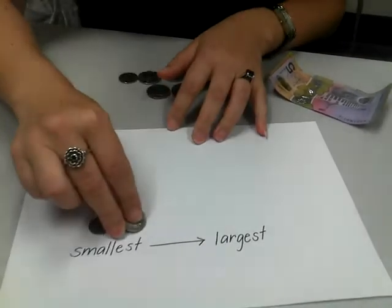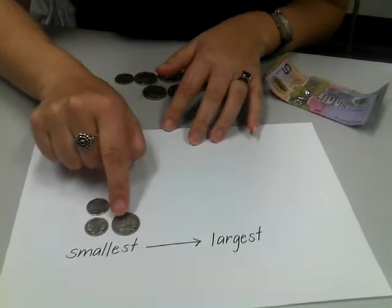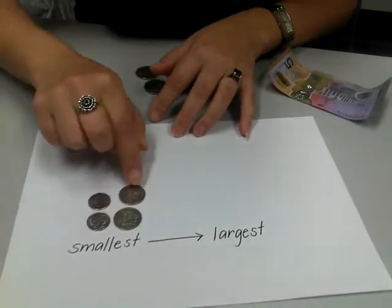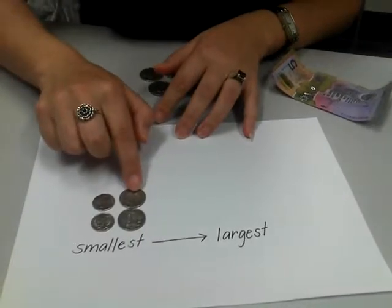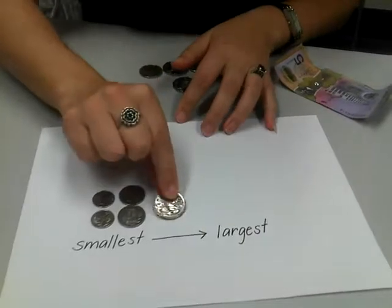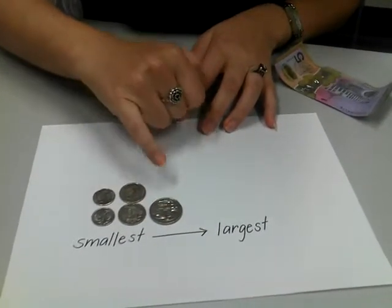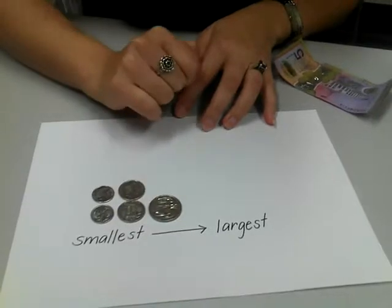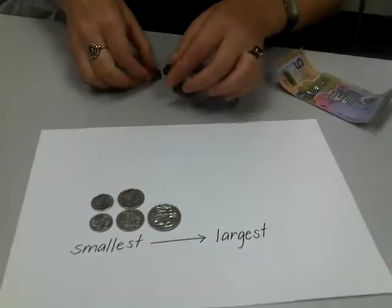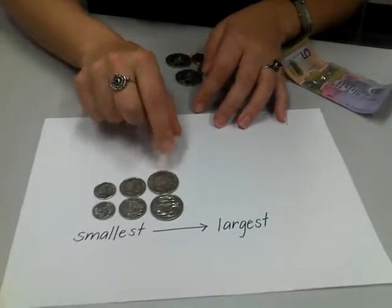This is the 10 cent piece. It has a picture of a lyrebird and the number 10, and on the other side a picture of the Queen's head. This is the Australian 20 cent piece. Can you see it has a picture of a platypus on it and the number 20 on one side, and on the other side a picture of the Queen's head.